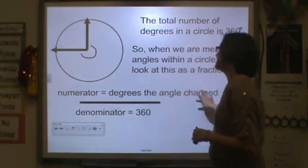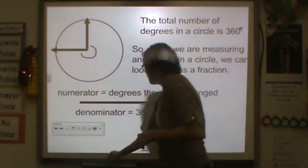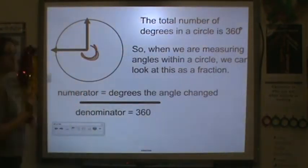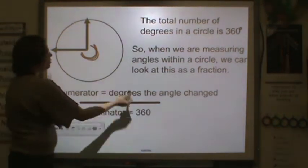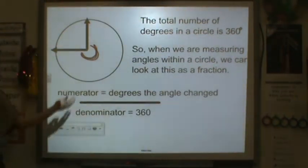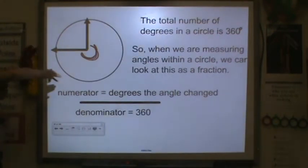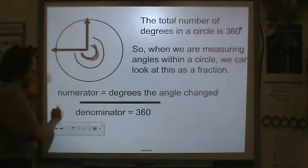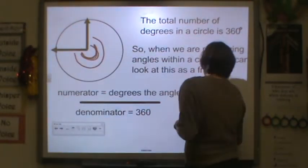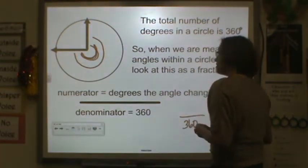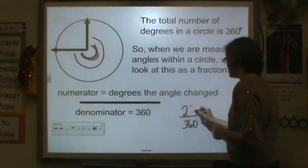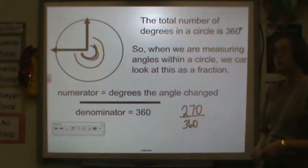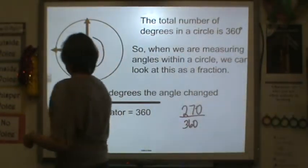So the numerator would be the number of degrees measured. This part right here, when we measure it, would be the numerator. The denominator will always be 360 because that's the total number of degrees. Now we know this is 1, 2, 3 quarter turns. So the fraction of this circle, remember 3 quarter turns, is 270 degrees. So that would be 270 degrees out of 360 degrees.